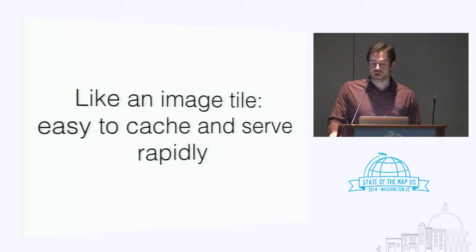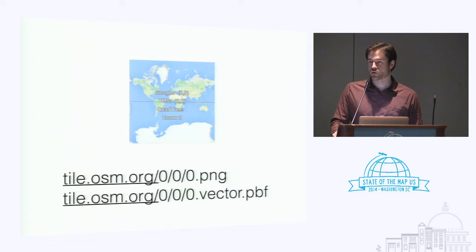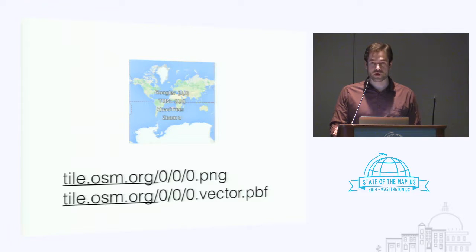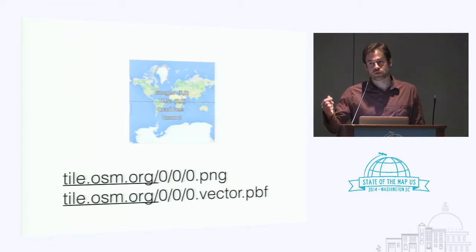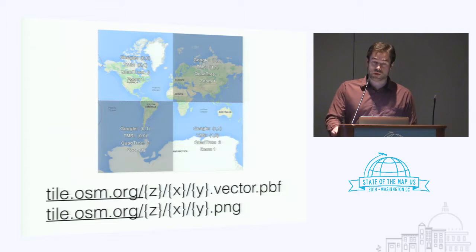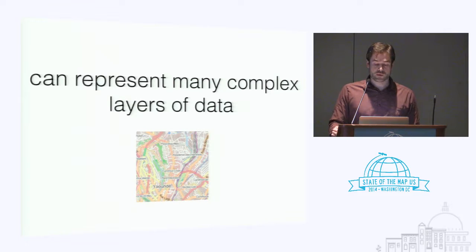So what is a vector tile? It's like an image tile — it's easy to cache and serve rapidly, so it's scalable by design, and it uses the same addressing scheme. When we talk about vector tiles at a URL, it's just the same as image tiles. You might refer to a tile at a URL like 0/0/0/z/x/y.png on osm.org. If osm.org serves vector tiles in the near future, you'd address it just the same. The .vector extension is a convention we've used, but it could be any extension.